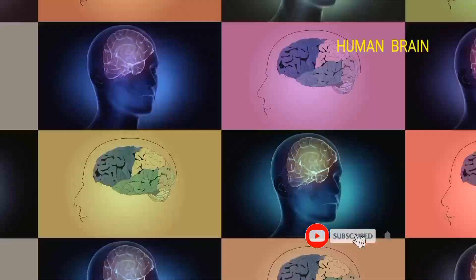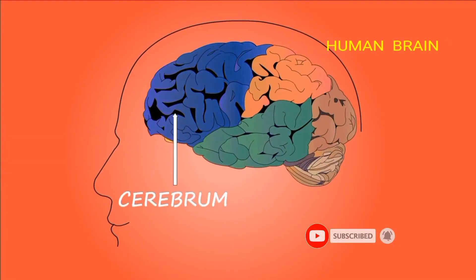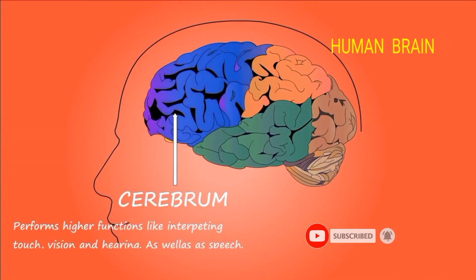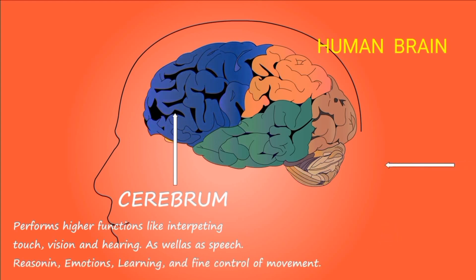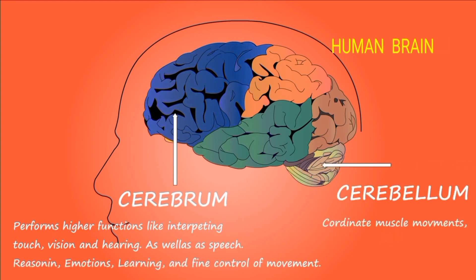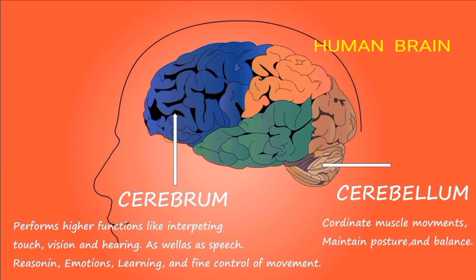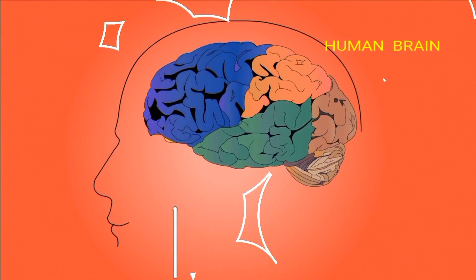The human brain is divided into three major parts. The Cerebrum is the largest part of the human brain. The Cerebrum enables sensory perception and controls voluntary motor actions.